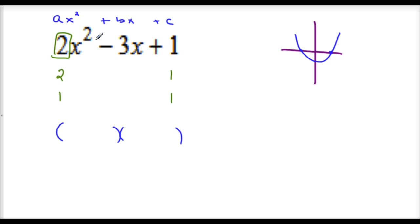We want to get a sum of negative 3. We have to consider possibilities. We could do 2 times 1, which is 2, and 1 times 1, which is 1. Since this sign is positive, both my signs will be the same sign, either both positive or both negative. Does 2 and 1 give me 3? They both give me 3, but since I want a negative 3, this is going to be negative 1 and negative 1. So this would be negative 2 and negative 1.